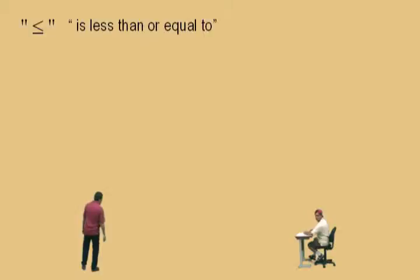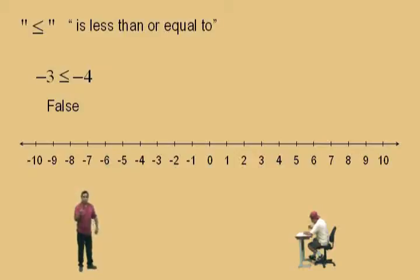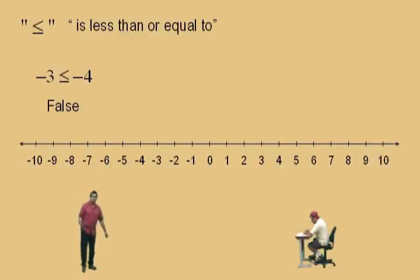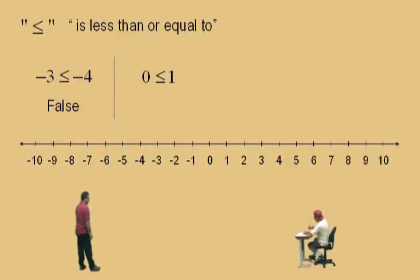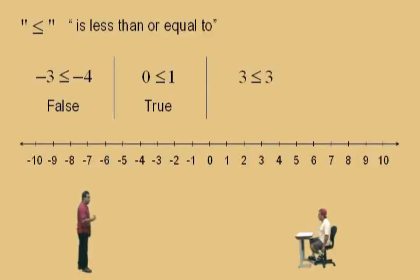Let's do less than or equal to now. Here we go — is negative 3 less than or equal to negative 4, Charlie? False. Remember, there's two possibilities. Is negative 3 less than negative 4? No, that's not true. Is negative 3 equal to negative 4? No. It's a false statement. Is 0 less than or equal to 1? Yes, it is — 0 is to the left of 1, so 0 is actually less than 1, giving a true statement. Is 3 less than or equal to 3? Is 3 less than 3? No. Is 3 equal to 3? Yes. So as long as you meet one of the conditions — either less than or equal to — your statement is true.